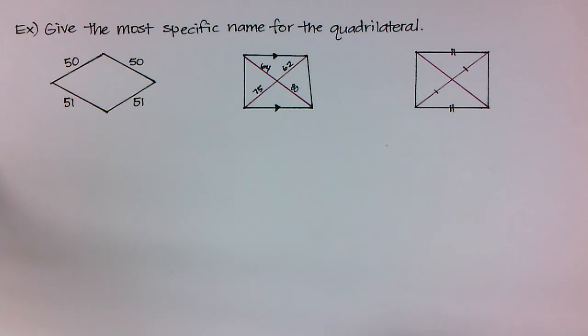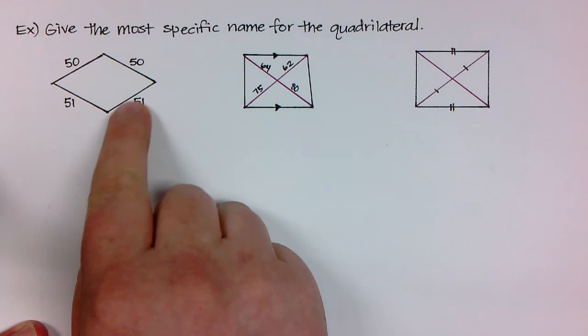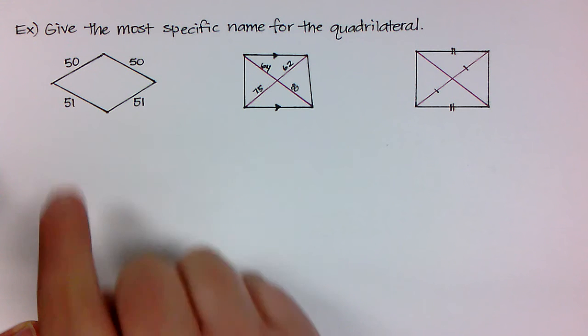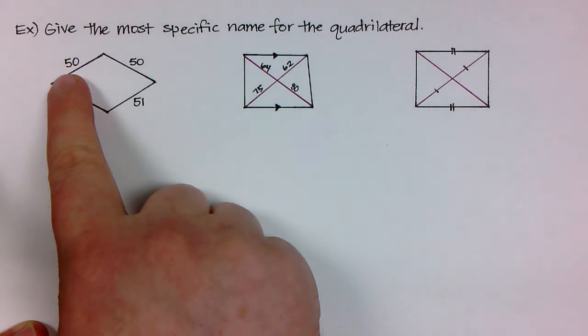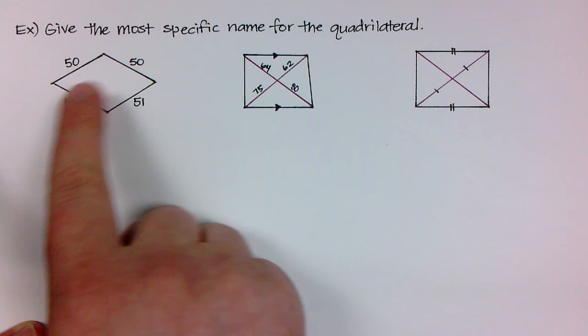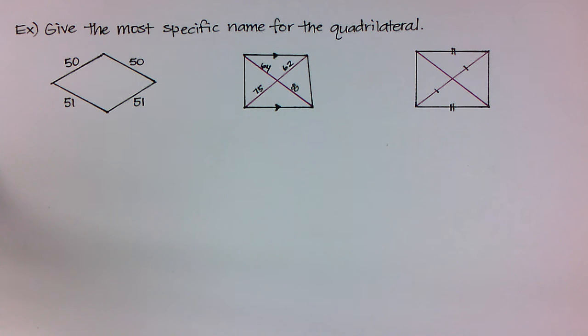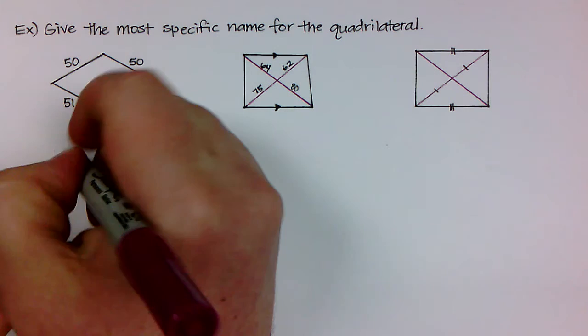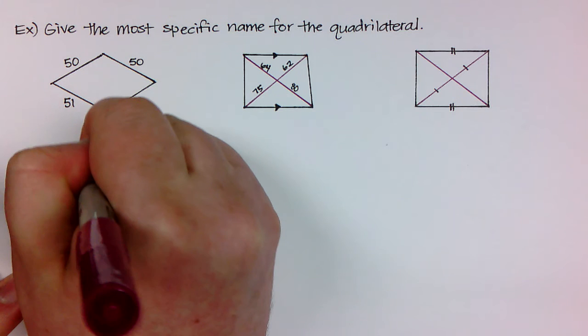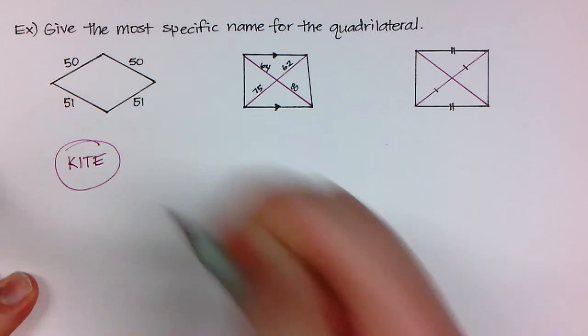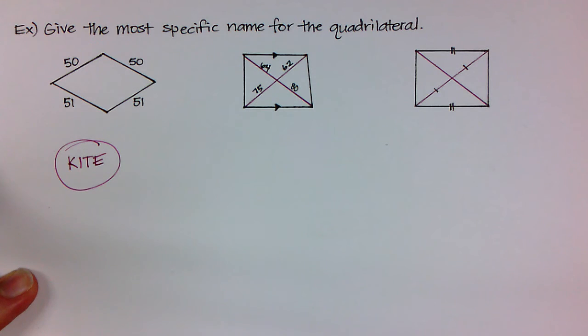So we want to find the most specific name and not just call it quadrilateral if we can go even further. So I'm looking here and I have only measurements, no angles to give me any information from, but I can see that these are both 50 and these both measure to 51. So this would be a kite, because the kite was where you had two pairs of consecutive congruent sides, which is what I have.